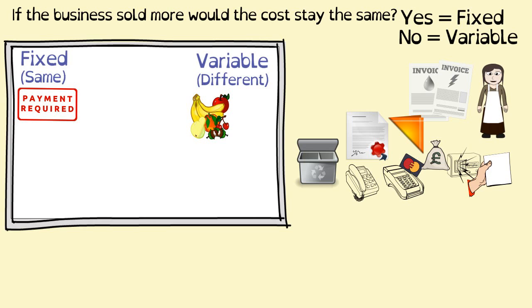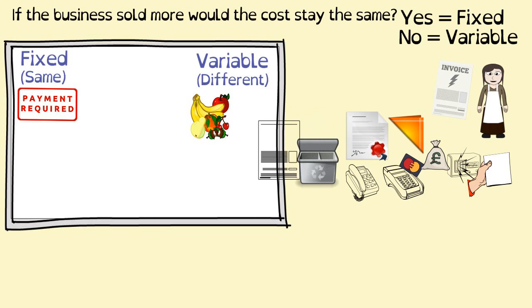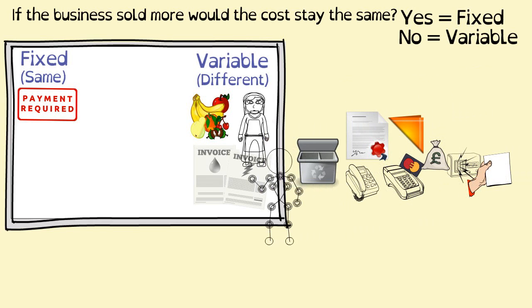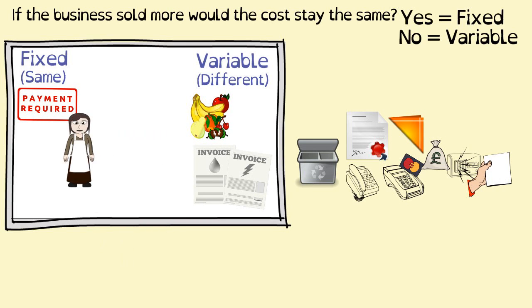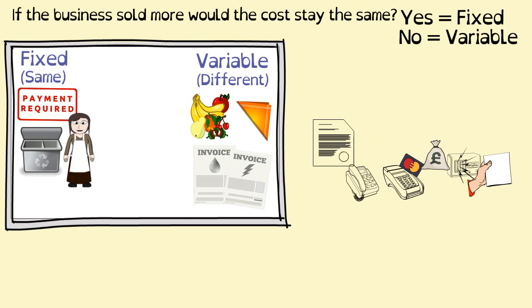Wages, we would try and get these as a fixed cost. Materials such as the straws and napkins - the more customers, the more we'd have to buy - a variable cost. Bin collection: fixed. Insurance: fixed. Health and safety and fire prevention: a fixed cost.